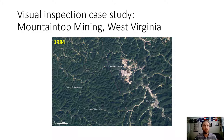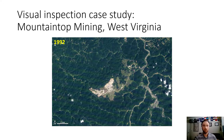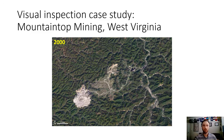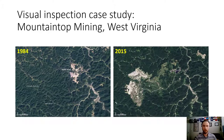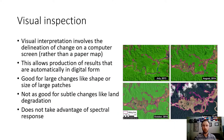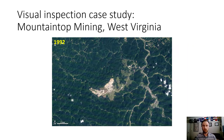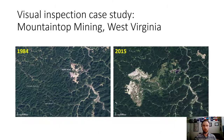A visual inspection case study: mountaintop mining in West Virginia over about a 20-year period in four-year increments — 1984, 1988, 1992, 1996, 2000, 2004, 2008, and then a comparison of 1984 to 2015. Same location, different time periods. It's pretty evident without any geoprocessing or spatial analysis that this mountaintop mine grew significantly and more or less moved from east to west over this nearly 30-year period.